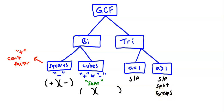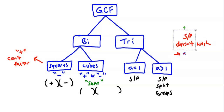What happens if the sum and product doesn't work? If the sum and product doesn't work, then you can't factor it any further — that trinomial is already the factor and you're done. In our cases it will be pretty rare, but it is a possibility.